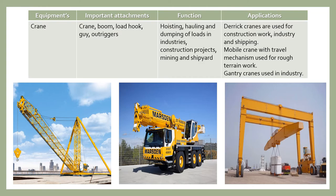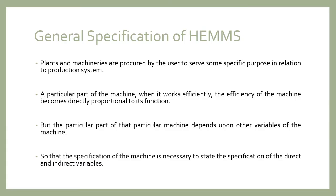Plants and machineries are procured by the users to serve some specific purpose in relation to the production system. When a particular part of the machine works efficiently, the efficiency of the machine becomes directly proportional to its function. However, the performance of a particular part depends upon other variables of the machine, so it is necessary to state the specification of the direct and indirect variables.